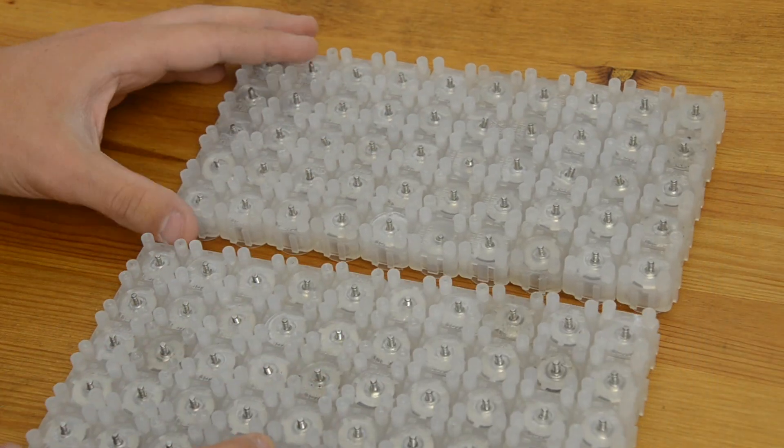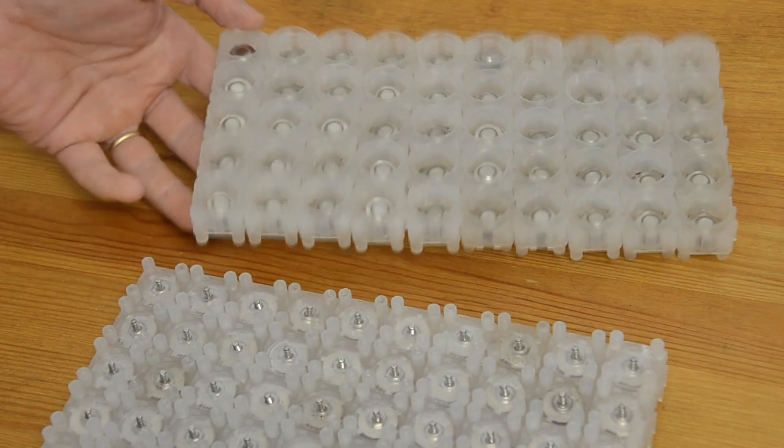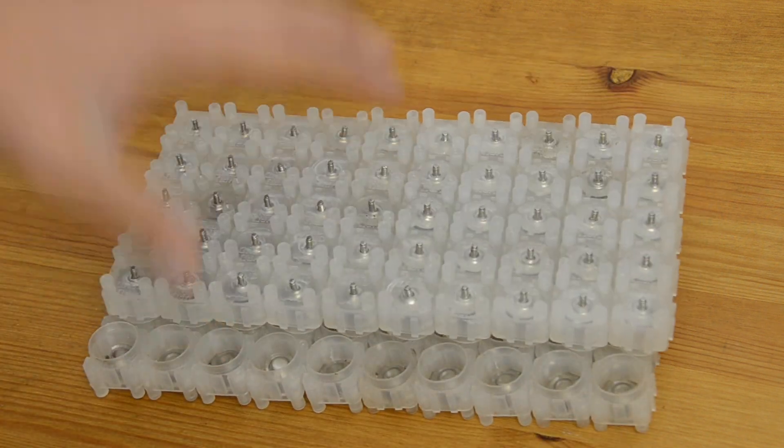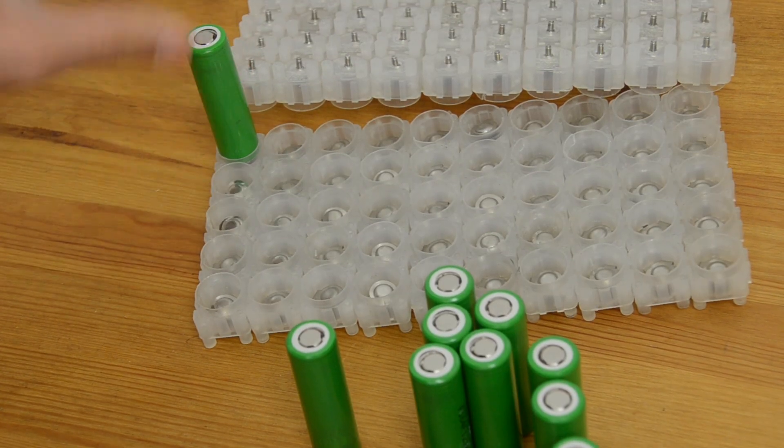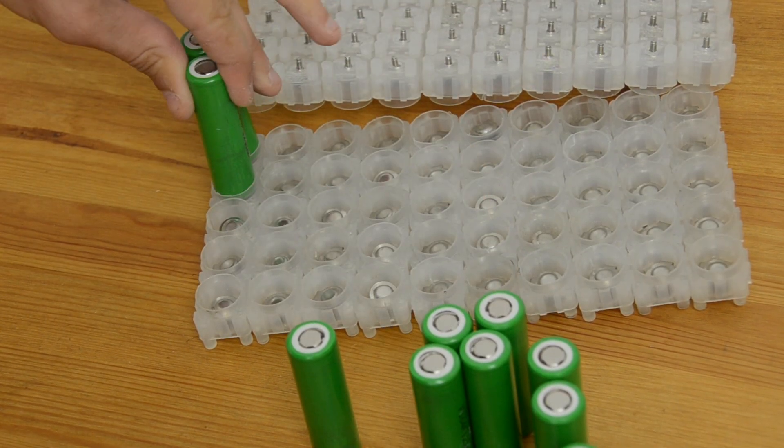And now that I've got both sides of my battery here. I can go ahead and flip one side over. That's going to become the bottom. And then my cells are just going to get sandwiched in between here. So I can go ahead and start adding my cells in here. I'm just going to push them in fairly firmly into the bottom here.